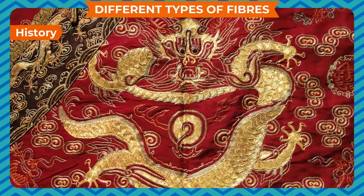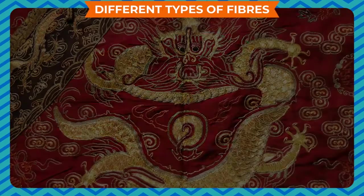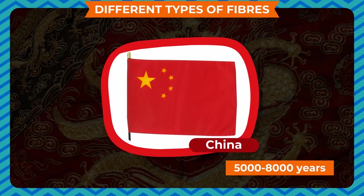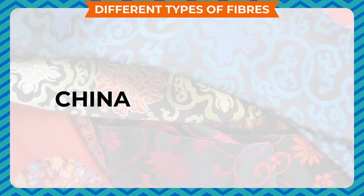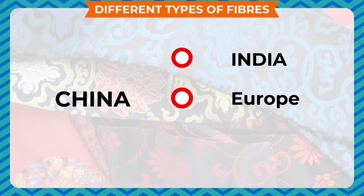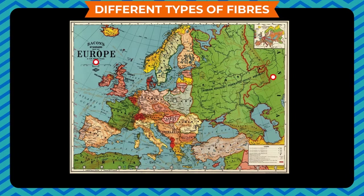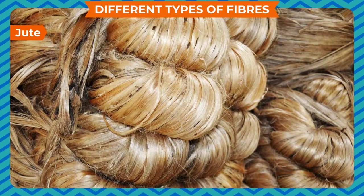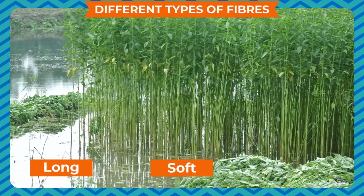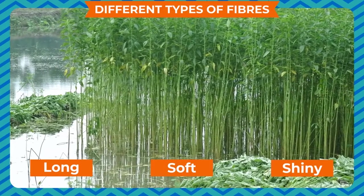History: silk was first developed in China 5,000 to 8,000 years ago. From China, silk was exported to India, the Middle East, Europe, and Africa. This trade was so extensive that the major sets of trade routes between Europe and Asia came to be known as the Silk Route.